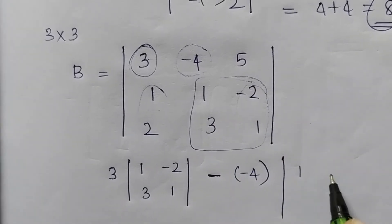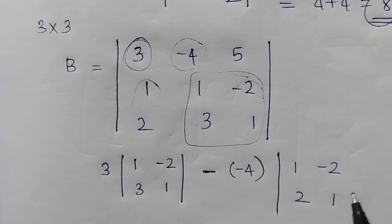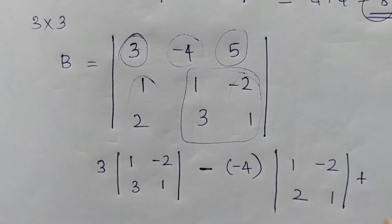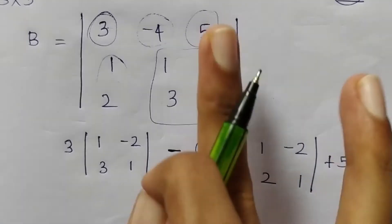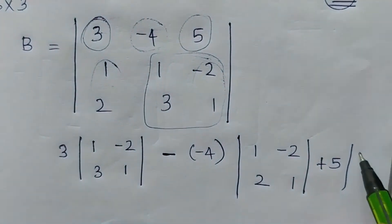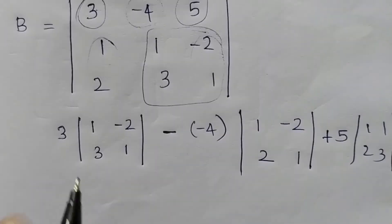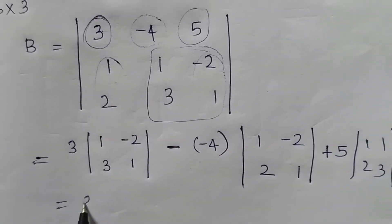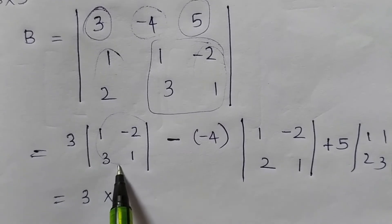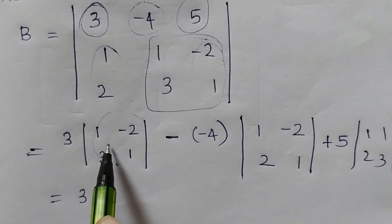The remaining elements for the second term are 1, minus 2, 2, 1. For the third element, which is 5, cancel its row and column. The remaining elements are 1, 1, 2, 3. We now compute the determinant using these sub-determinants.